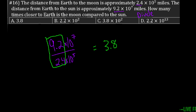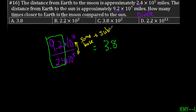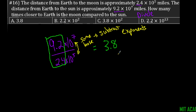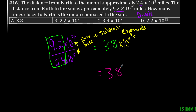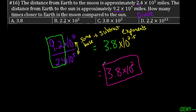I'm going to take 9.2 times 10 to the 7th divided by 2.4 times 10 to the 5th. I can separate this and divide the numbers: 9.2 divided by 2.4 equals 3.8. Since the bases are the same, I can subtract the exponents: 7 minus 5 equals 2. So altogether this is going to be 3.8 times 10 to the exponent of 2. That's my final answer.